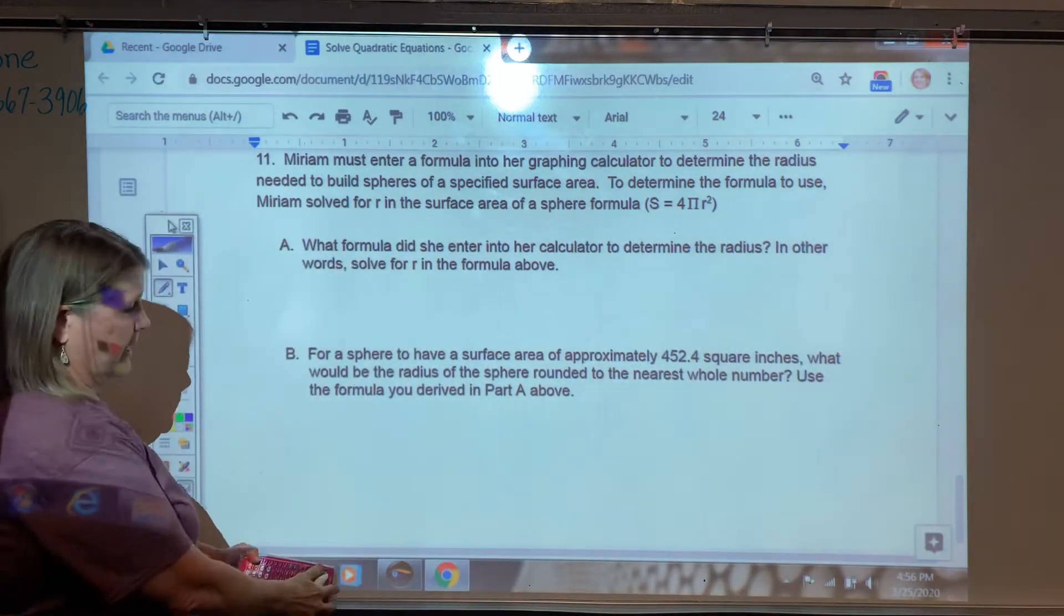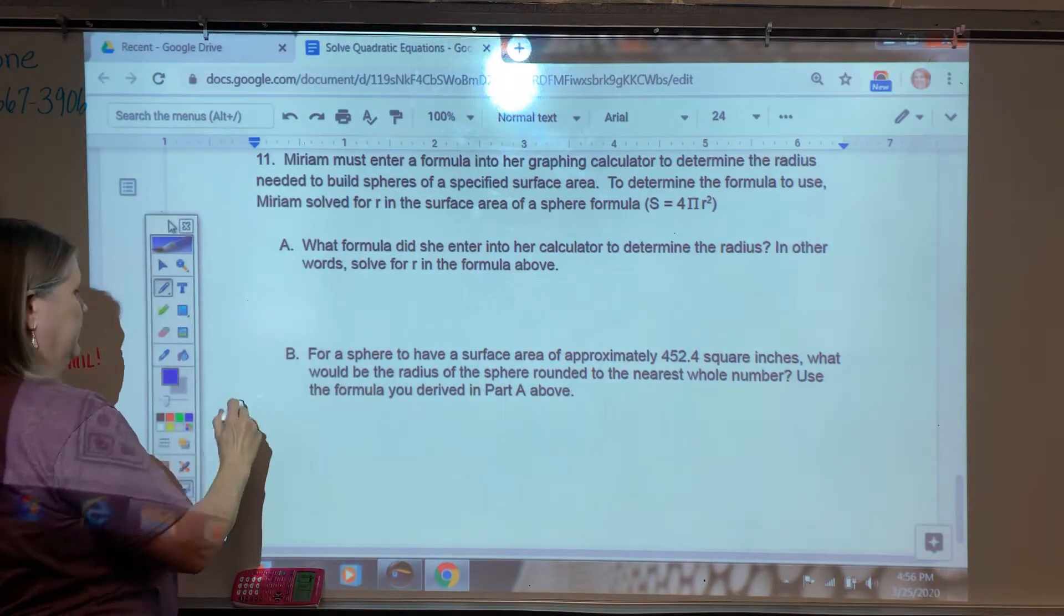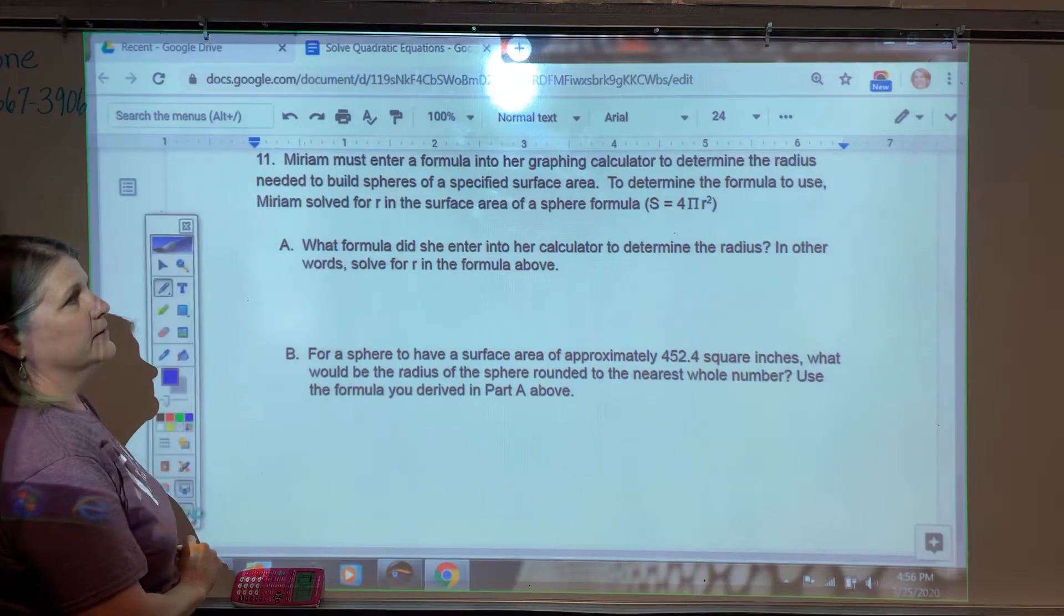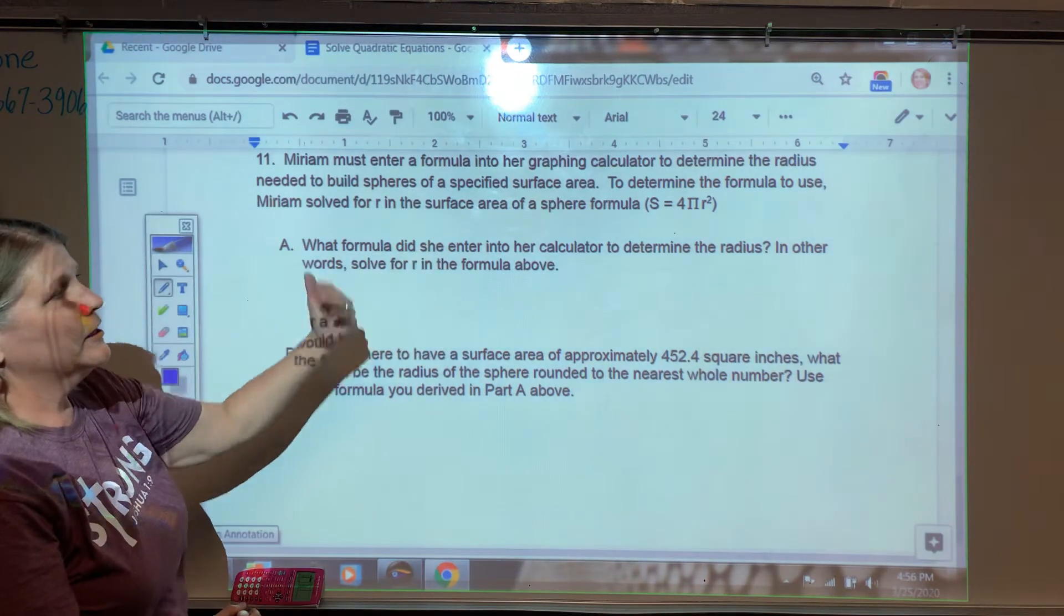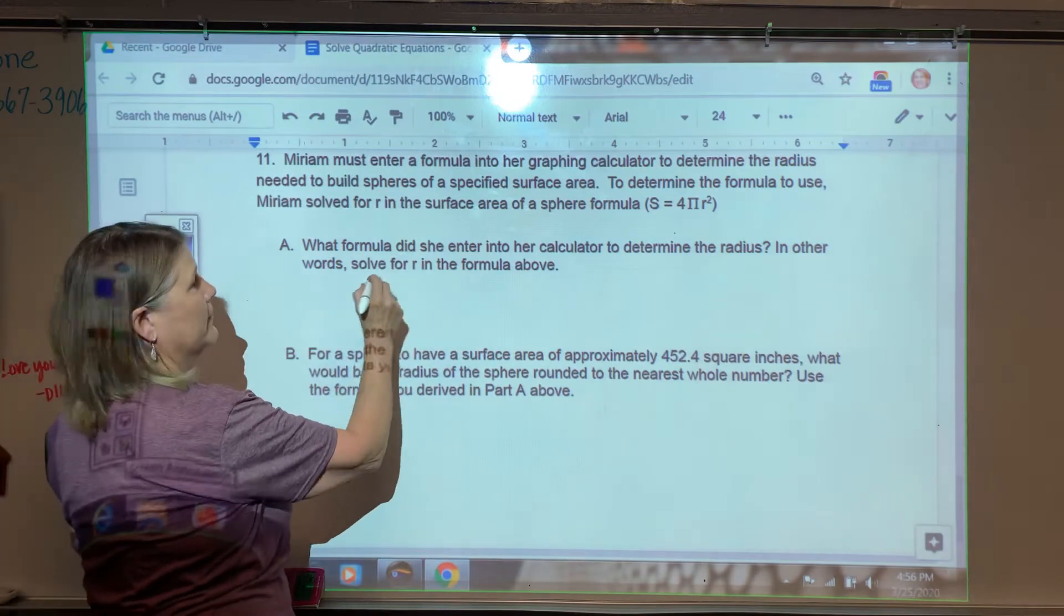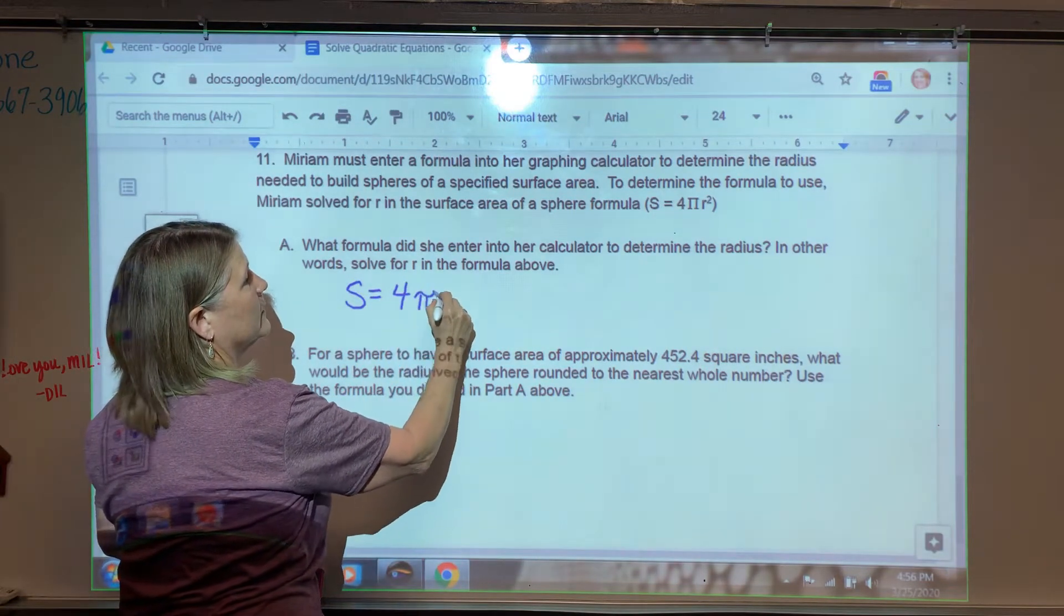What formula did she enter into her calculator to determine the radius? So what we can do is start off with that given formula and solve for R. So I'm just going to recopy the formula. S equals 4 pi times R squared.